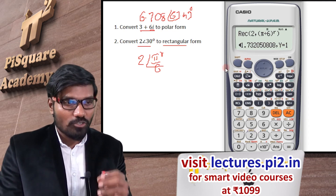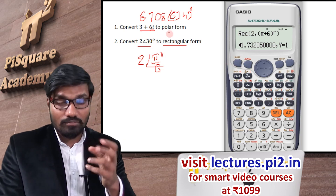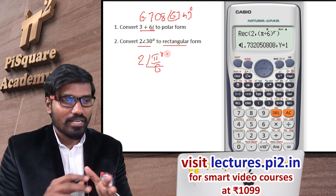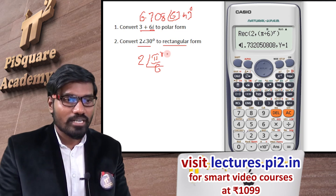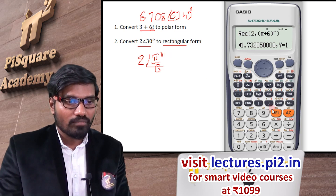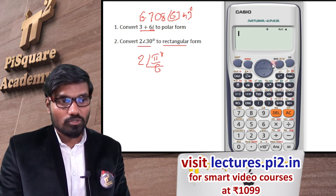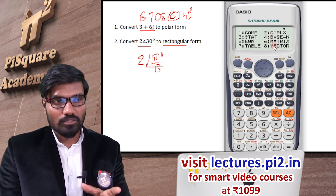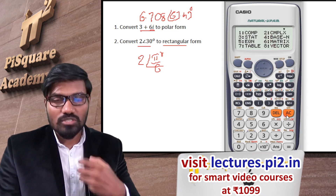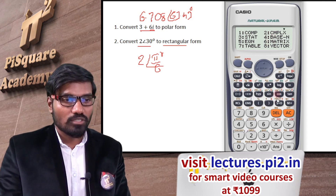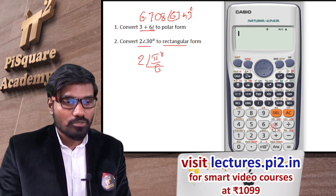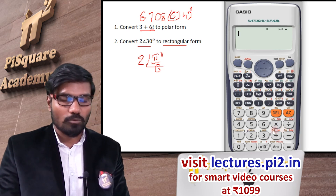Without changing the calculator mode, you can do these conversions. For operations like multiplication, all those things can only be done when you are in complex mode — you need to change to complex mode, which is easier. If you want to perform more such operations, get into complex mode. For only simple conversions, you can directly use the Pol as well as Rec options.